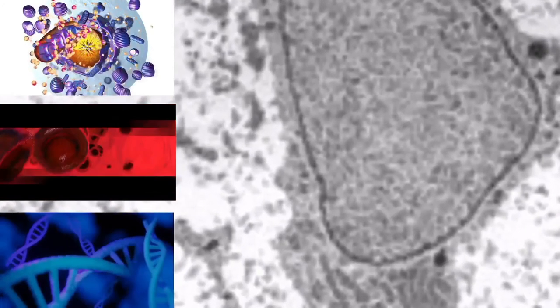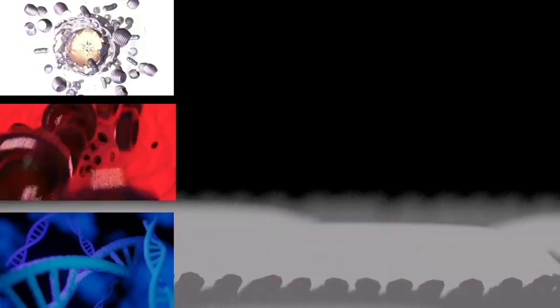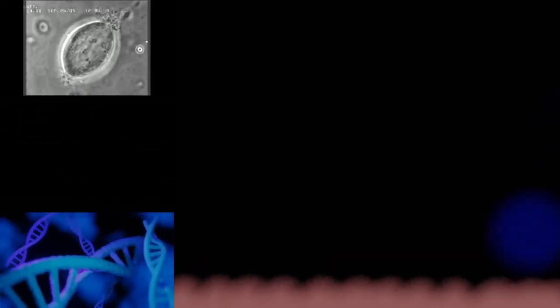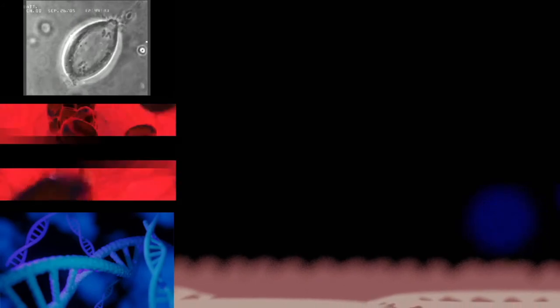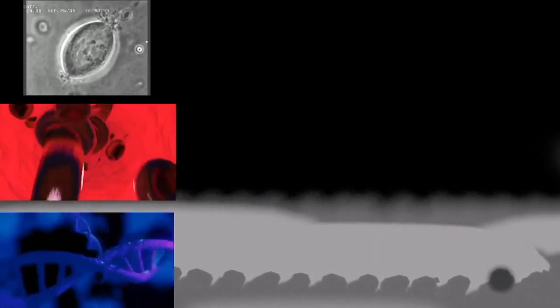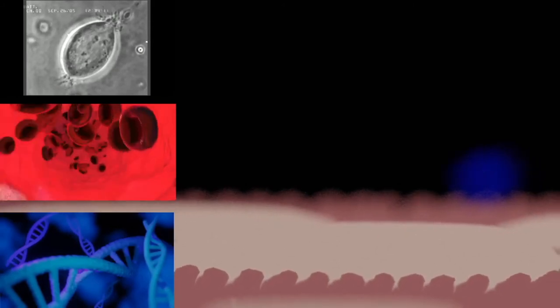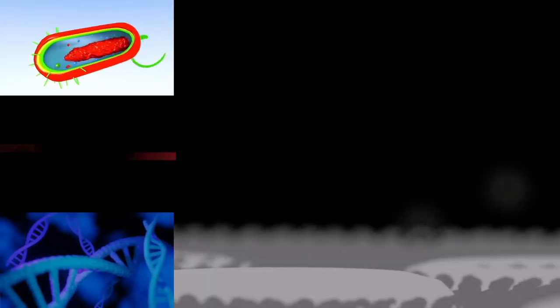Anaphase lag occurs when the movement of one chromatid is impeded during anaphase. This may be caused by a failure of the mitotic spindle to properly attach to the chromosome. The lagging chromatid is excluded from both nuclei and is lost. Therefore, one of the daughter cells will be monosomic for that chromosome. Endoreduplication occurs when chromosomes duplicate, but the cell does not subsequently divide. This results in polyploid cells or, if the chromosomes duplicate repeatedly, polytene chromosomes. Endoreduplication is found in many species and appears to be a normal part of development.